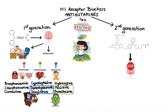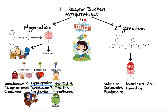Examples of second generation H1 antihistamines include cetirizine, desloratadine, fexofenadine, levocetirizine, and loratadine. Additionally, we can include in this group drugs that have both antihistamine and mast cell stabilizing effects, namely azelastine and olopatadine, available in ophthalmic and nasal formulations, as well as ketotifen, which is currently available in ophthalmic formulation only. As a side note, keep in mind that in some medical literature, ketotifen is classified as a first generation antihistamine.